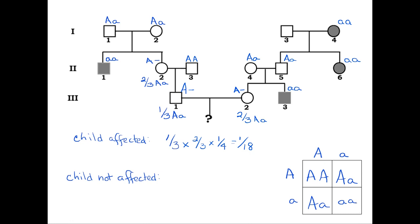In this scenario, the probability that the child is not affected must be 1 - 1/18, or 17/18.